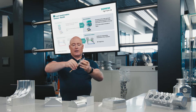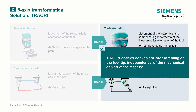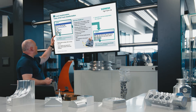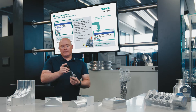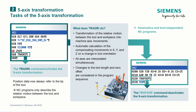This results in a straight line. TRAORI enables convenient programming of the tool tip — the actual point of contact with the workpiece — completely independently of the mechanical design of the machine. The five-axis transformation is activated by the TRAORI command at the appropriate point in the NC program, and from that point on all position data always refer to the tip of the tool. All axes are interpolated simultaneously, resulting in NC programs that are independent of the kinematics and tool. The TRAORI command is deactivated with the TRAFOOF command at the end of the NC program.